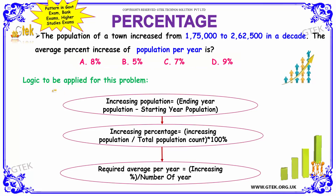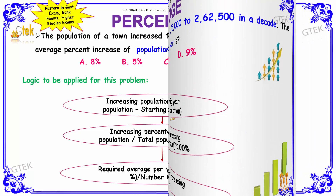The logic to apply for this problem: first, find the increasing population by subtracting the starting year population from the ending year population. Then find the increasing population percentage by dividing the increase by the total starting population, multiplied by 100. The required average per year is then the increasing percentage divided by the number of years. Let us see how to apply this logic to solve the sum.